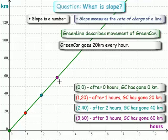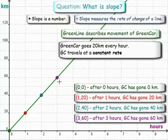So what do we say in real life about green car? In real life we say green car is traveling at a constant rate or a constant speed. And what is that rate? 20 kilometers per hour.